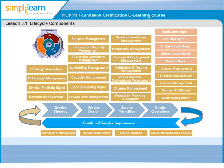Continual service improvement is the process of continuously looking at the service and making sure that service quality, effectiveness, and efficiency are continuously improving. This is done by collecting lots of data about how the service is functioning over a period of time. This is an ongoing process throughout the life cycle of a service.